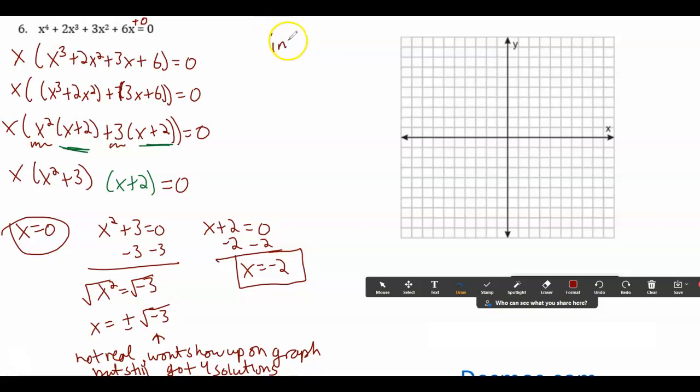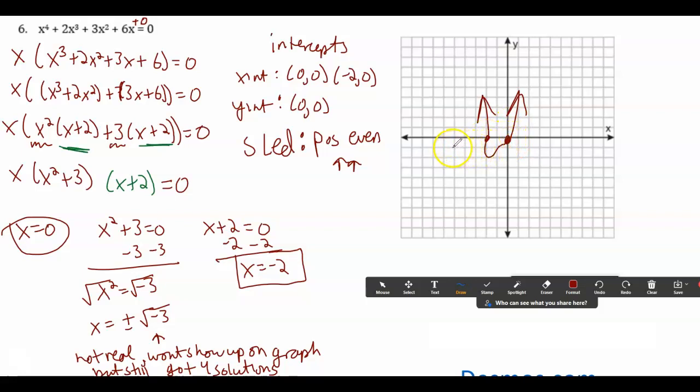So now I'm going to plot this. My x-intercepts are zero, zero, negative 2, zero. My y-intercept, I added a zero at the end. So it's also zero, zero. And if we have sled, this is positive even. So it's going to be up, up again. So you can also sketch these on Desmos. But these are just basic sketches.